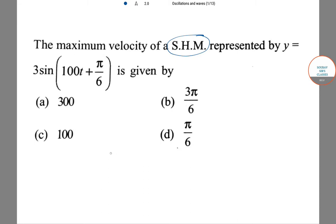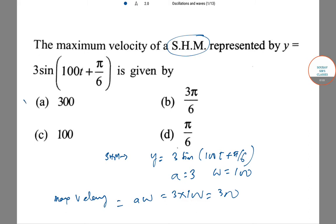From the equation of SHM, y = 3 sin(100t + π/6), we have amplitude a = 3 and angular frequency ω = 100. Maximum velocity v_max = aω = 3 × 100 = 300 units. So option A is the correct answer.